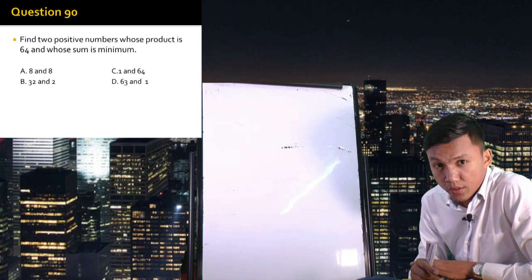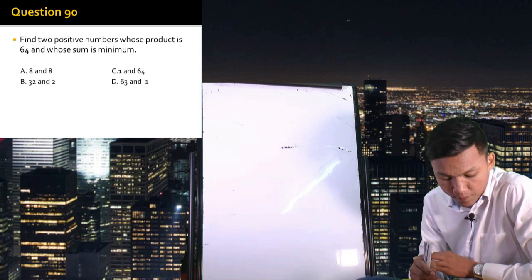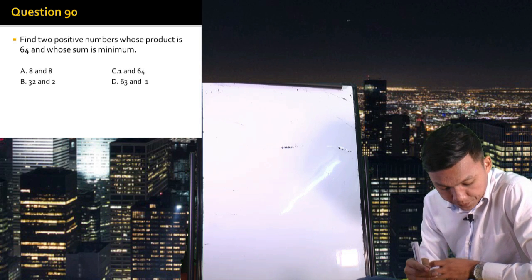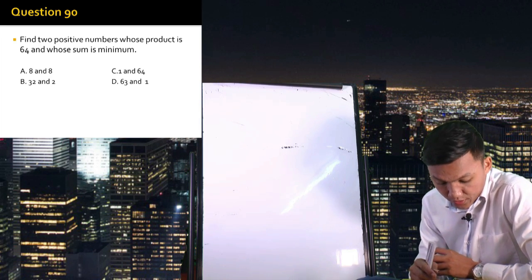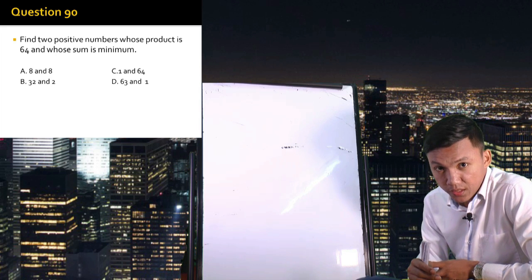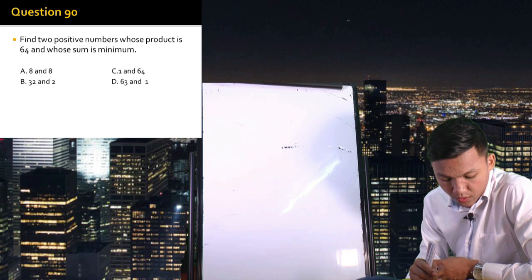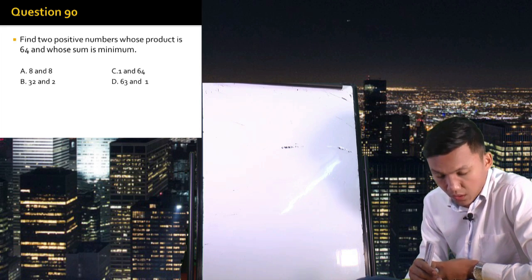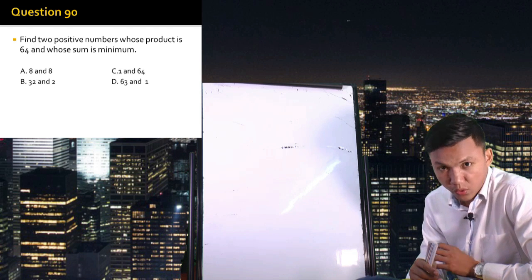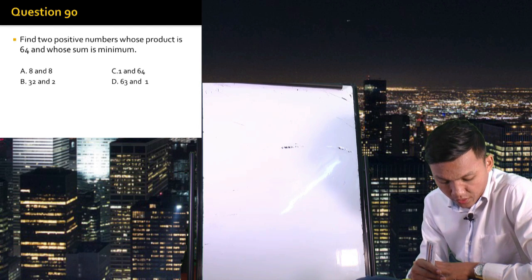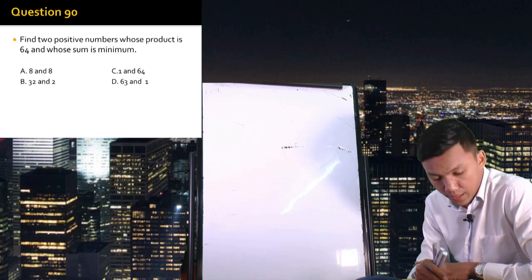For letter C: 1 and 64 — product is 64 but their sum is 65, larger than 16. Letter D does not have a product of 64, so it's not considered. The correct answer is letter A: 8 and 8, which gives the minimum sum of 16.